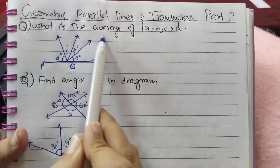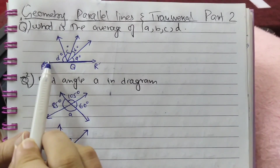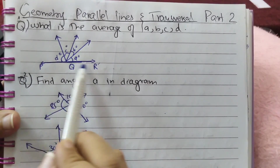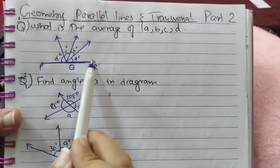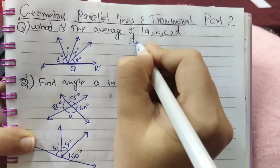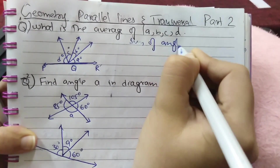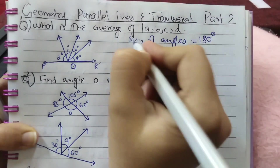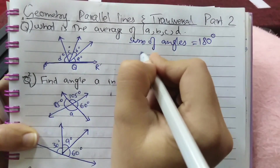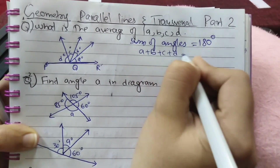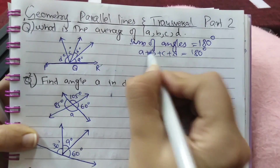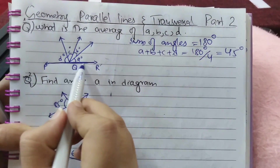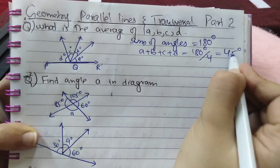Question number 1: What is the average of A, B, C, and D in this diagram? As you see, this is a straight line, so the sum of angles in a straight line is always equal to 180 degrees. So, sum of A plus B plus C plus D equals 180 degrees. As there are 4 angles, 180 divided by 4 equals 45 degrees. So each angle in this straight line is 45 degrees.